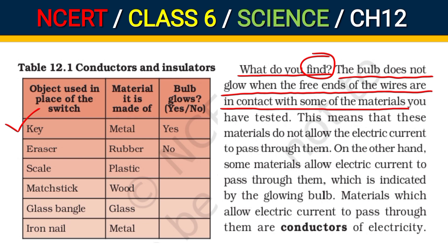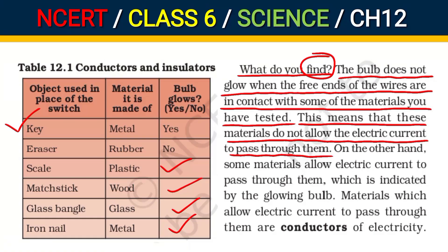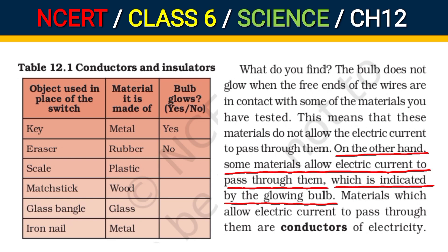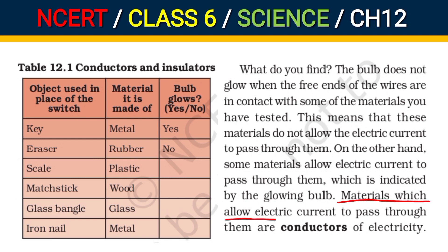When you test some of the materials, you will find that for many materials the bulb does not glow. This means that these materials do not allow the electric current to pass through them. On the other hand, some materials allow electric current to pass through them, which is indicated by the glowing of the bulb.